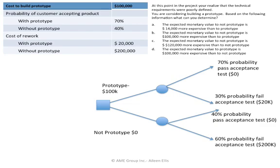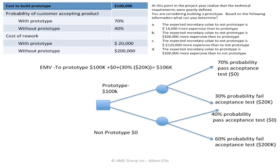Now let's get back to the question. I need to understand the expected monetary value to prototype and the expected monetary value to not prototype. The EMV to prototype would be $100,000 to build the prototype, plus $0 rework if the real product passes acceptance testing, plus 30% times $20,000 if the real product fails acceptance testing.